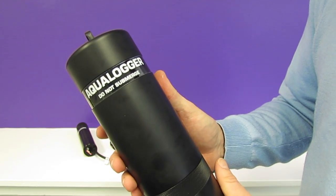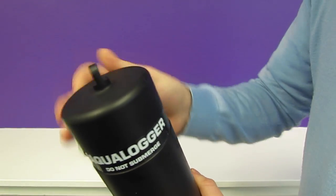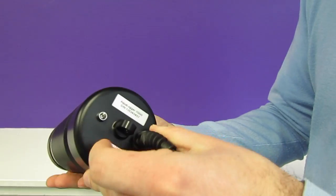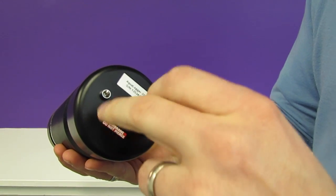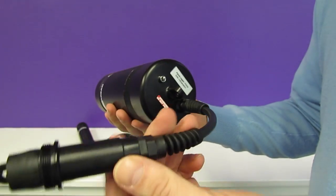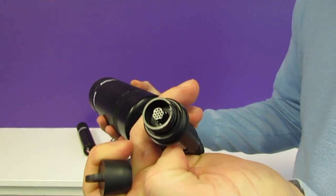On the top end of the logger we have the fastening clip. On the bottom end we again have the hole to allow the air pressure sensor inside to operate, the LED for indication, and again the stubby cable with aqua con connector.